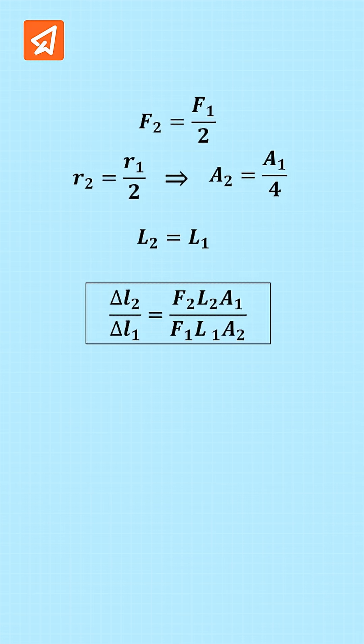If the force becomes half, then F2 becomes F1 by 2. If the radius becomes half, then A2 becomes A1 by 4. And length is same, then L2 is equal to L1.